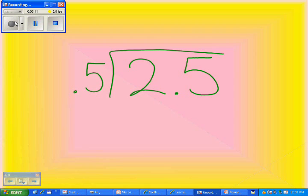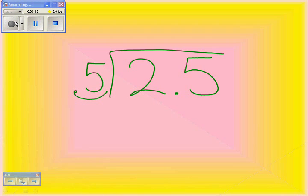Move the decimal over on the 0.5 to make it a whole number. Then, move the decimal in the 2.5 over the same amount of places and bring it up to the line. Next, divide as usual.